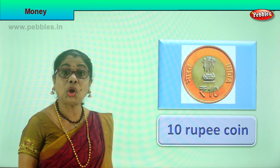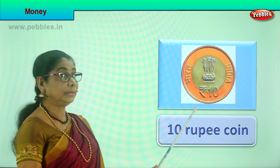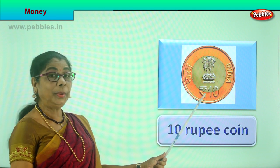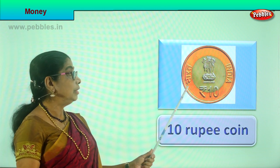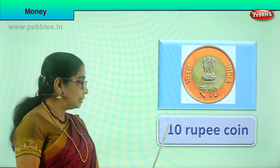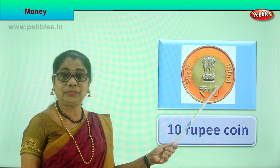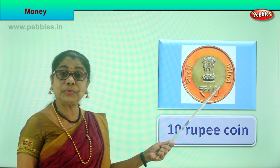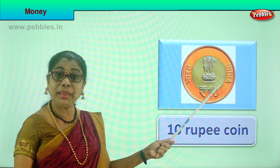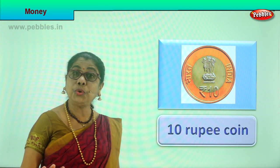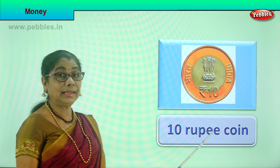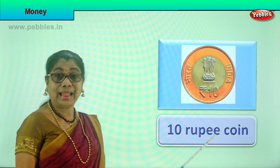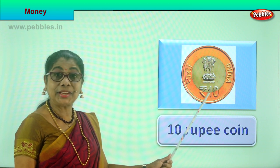Now look at the next higher denomination coin. There is silver and gold here and it says 'rupees ten'. It's a big coin with a nice gold ring around it — the ten rupee coin. So we've seen all the coins: one rupee, two rupees, five rupees, and ten rupees. In Indian currency we have four coins.